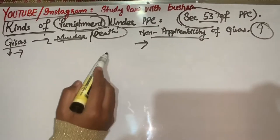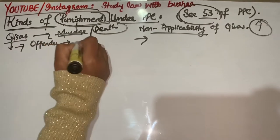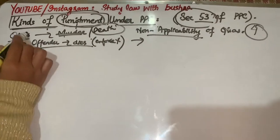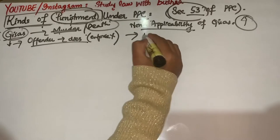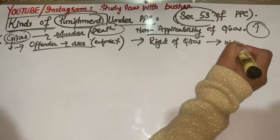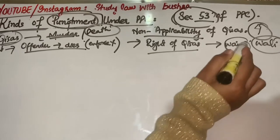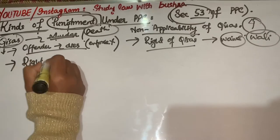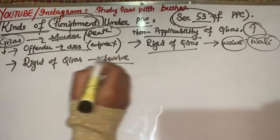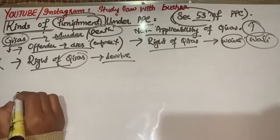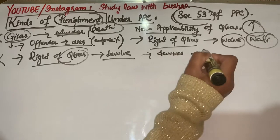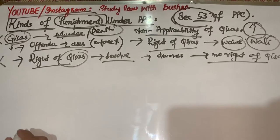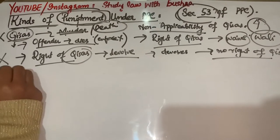There are four cases in which Kisas is non-applicable on the offender. Number one: where the offender dies before the enforcement of Kisas. Number two: where the right of Kisas is waived by any wali. Number three: where the right of Kisas devolves on the offender. Number four: where the right of Kisas devolves on the person who has no right of Kisas against the offender.